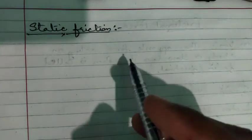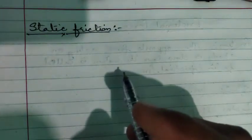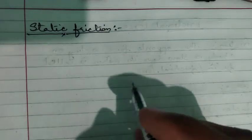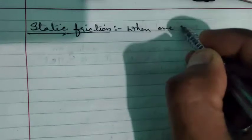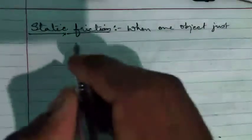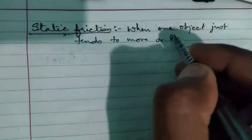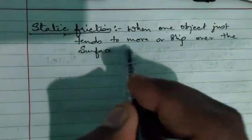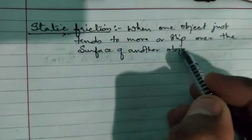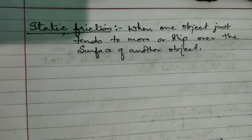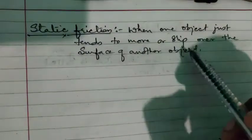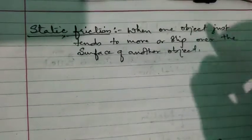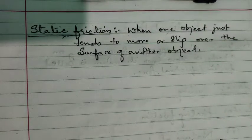Let us start with static friction. The first type of friction is static friction. Static friction is defined as the maximum force present between two objects when one object just tends to move or slip over the surface of another object. That type of friction is called static friction.